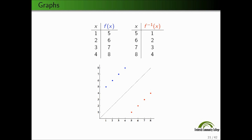f inverse is a direct reflection over the line y = x, and vice versa. So directly reflect over that line to get the points — a point reflects over the line to get to the corresponding point.